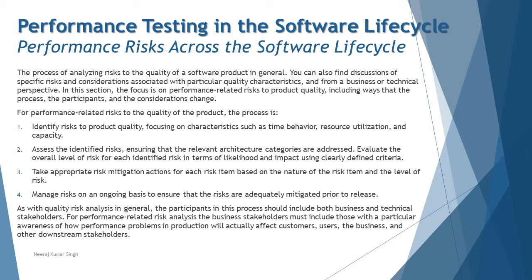The process of analyzing risk relates to the quality of the software product in general, with discussions of specific risks associated with particular quality characteristics from a business or technical perspective. The focus here is on performance-related risk to product quality. At a foundation level, we understood that risks are of two types: project risk and product risk, where product risk is driven by quality characteristics such as architecture, security, usability, and performance. Performance plays a vital role when it comes to product risk.